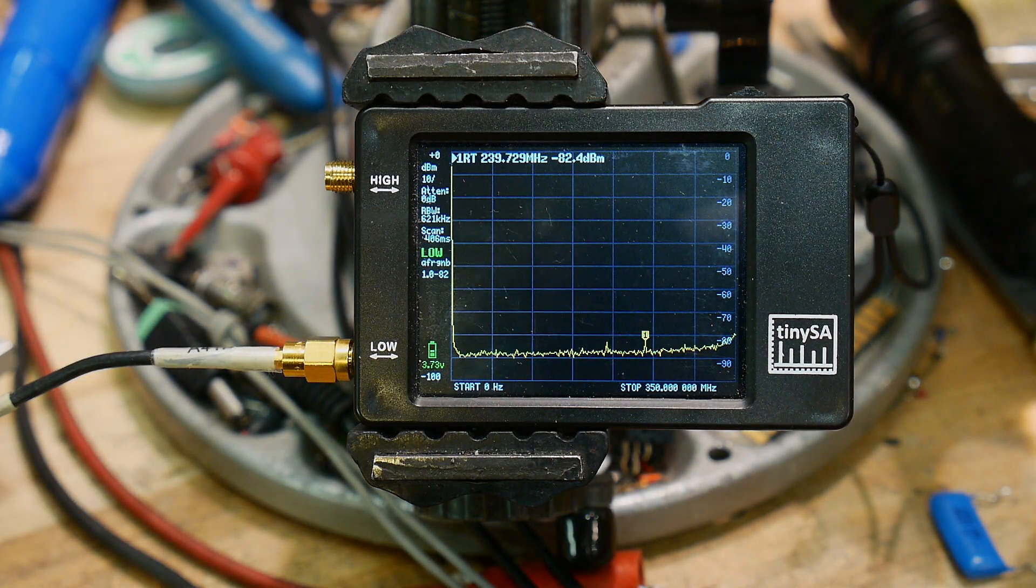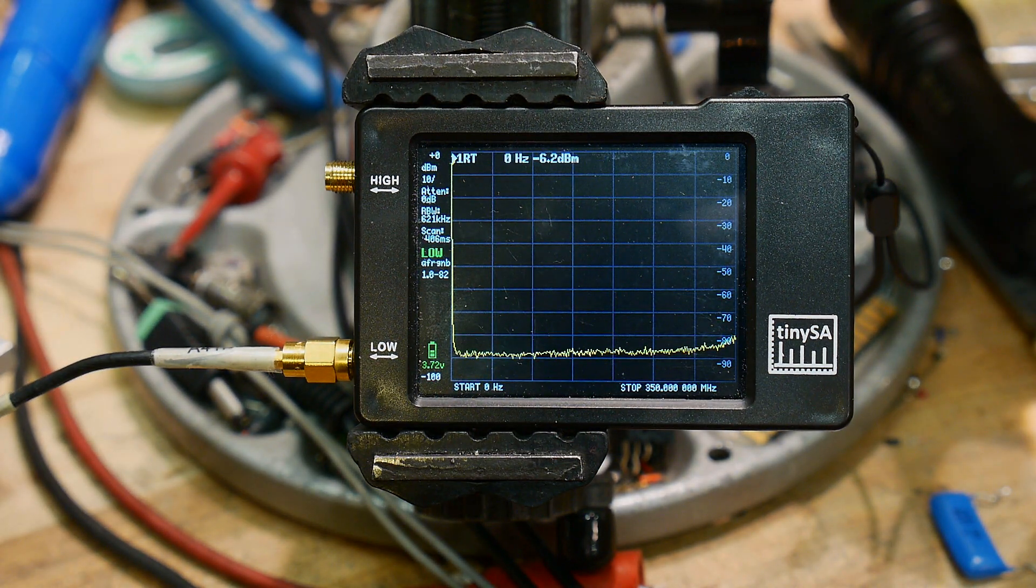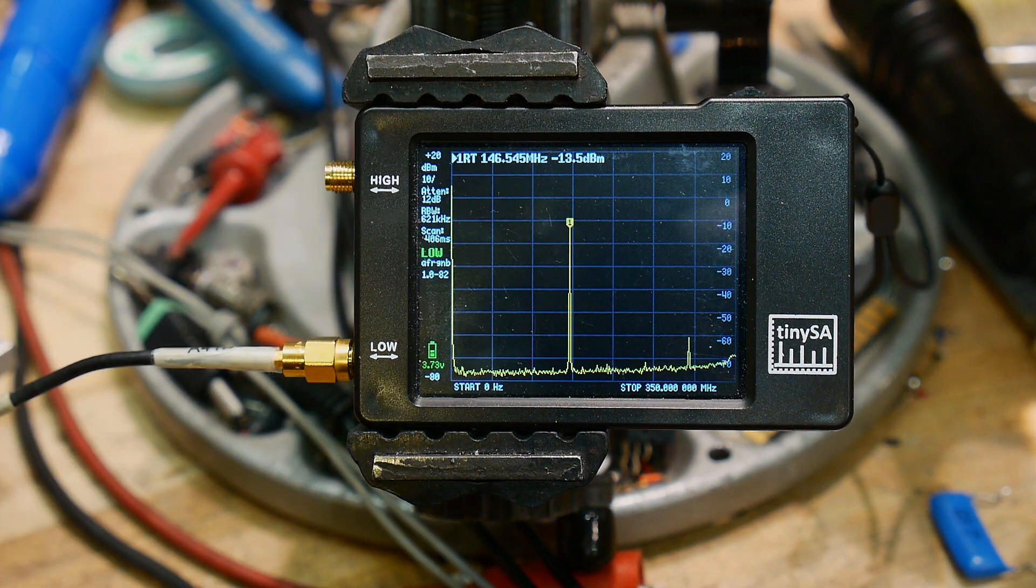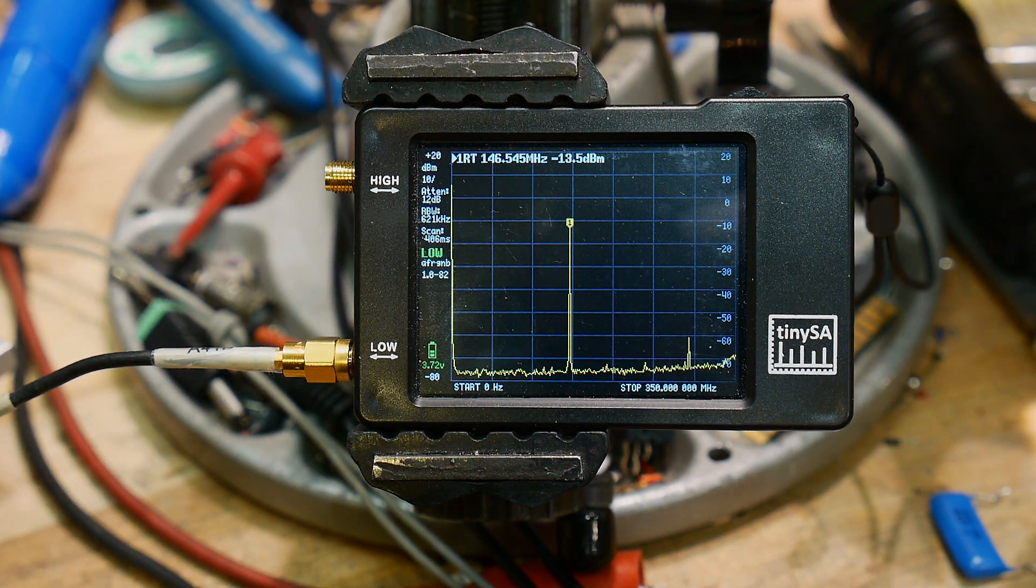And let me see if I can get rid of the glare on the screen here. All right, that's better. So I'm now going to transmit and there we go. We have a peak and it's measuring at minus 13.5 dBm right on the nose.